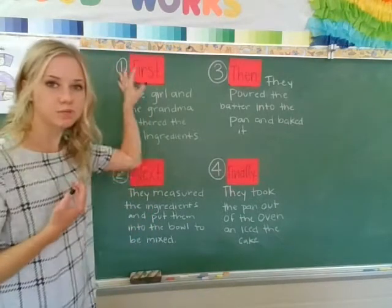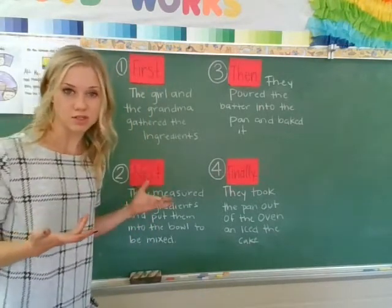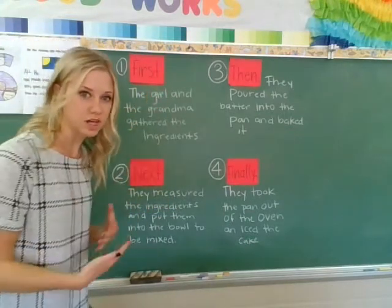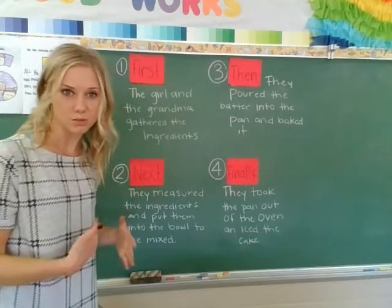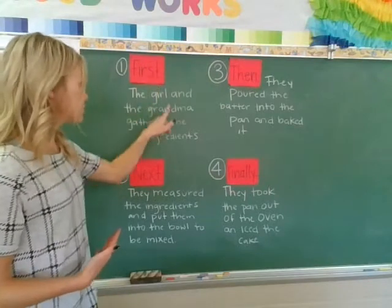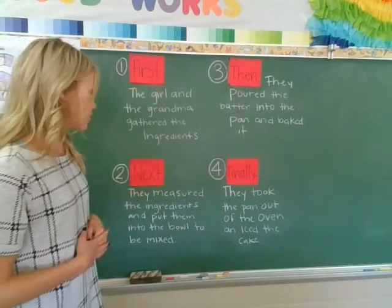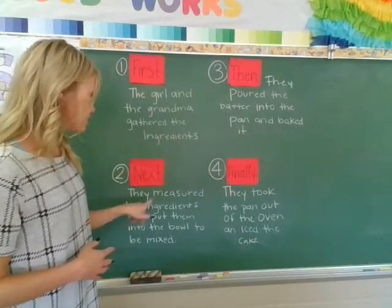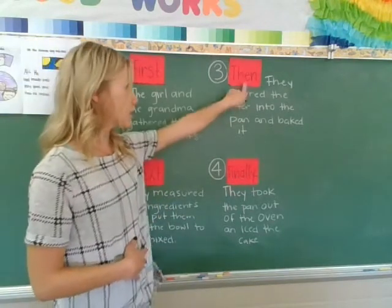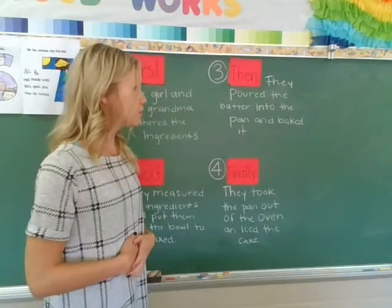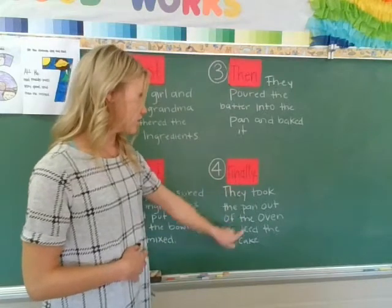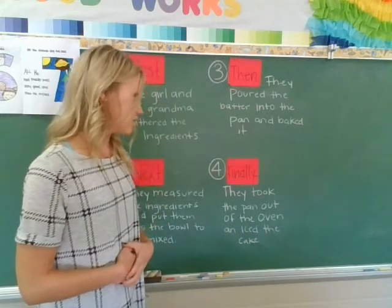So let's put this together and see how our summary sounds. We're using these words because they help us tie the summary together and make it flow better. First, the girl and the grandma gathered the ingredients. Next, they measured the ingredients and put them into the bowl to be mixed. Then, they poured the batter into the pan and baked it. Finally, they took the pan out of the oven and iced the cake.